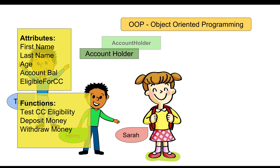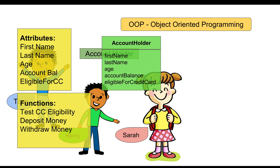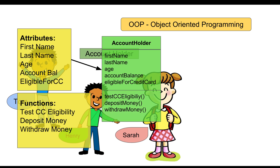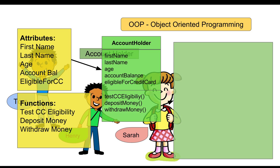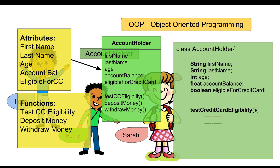In object-oriented programming, the same information is imitated in the class. So an account holder class will have the same variables like first name, last name, age, account balance, eligibility for credit card, and will have similar functions. If you take the example of a Java class, the account holder class in Java will have all these variables and all these functions.